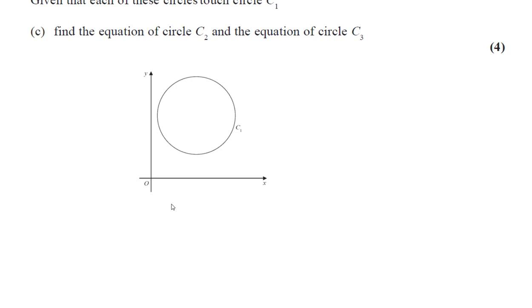So we know the center of both of them is (0, 0). So they're both going to say x squared plus y squared equals something. Now what we need to do is to find the radius of each of those circles, and then we can form the equation, because the center is (0, 0).